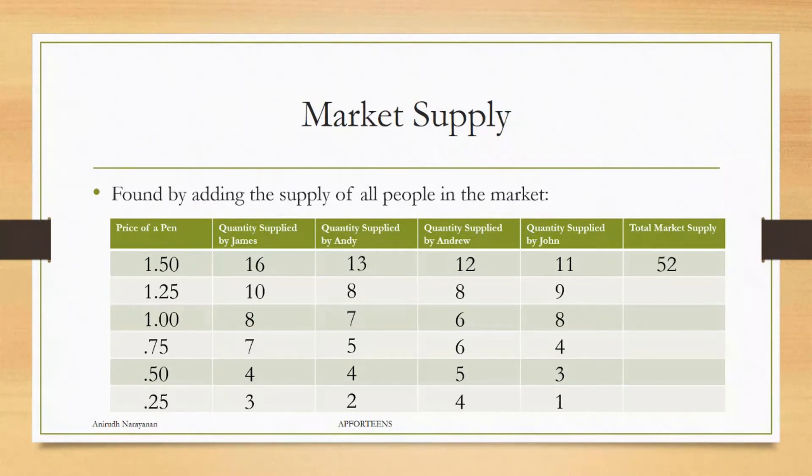16 plus 13 plus 12 plus 11 is 52 market supply at a $1.50 price of a pen. And you can see here, as you go down the row, the total market supply drops even more.